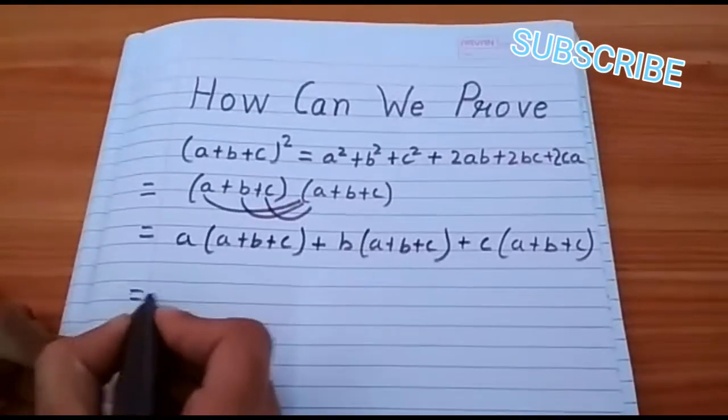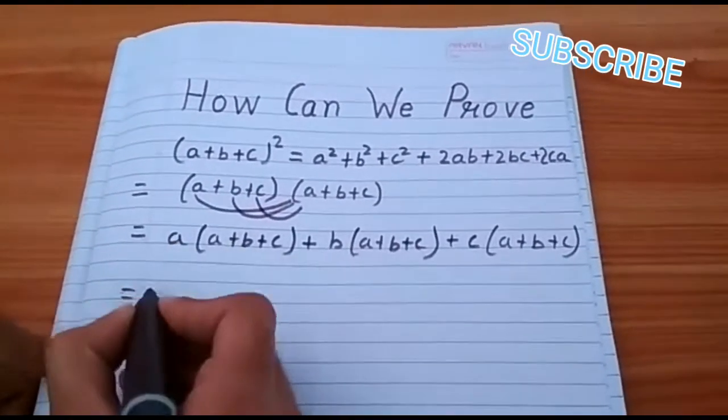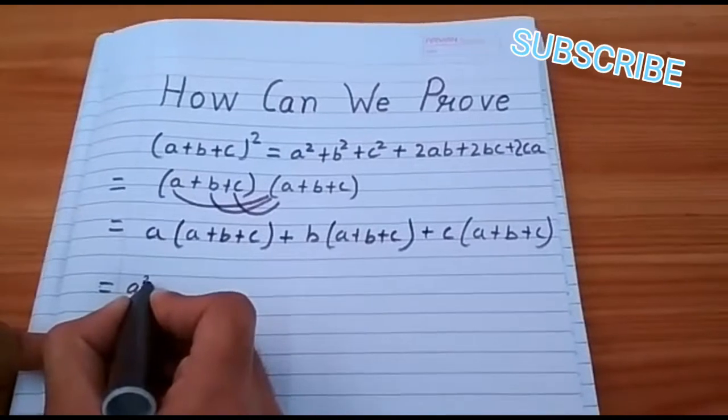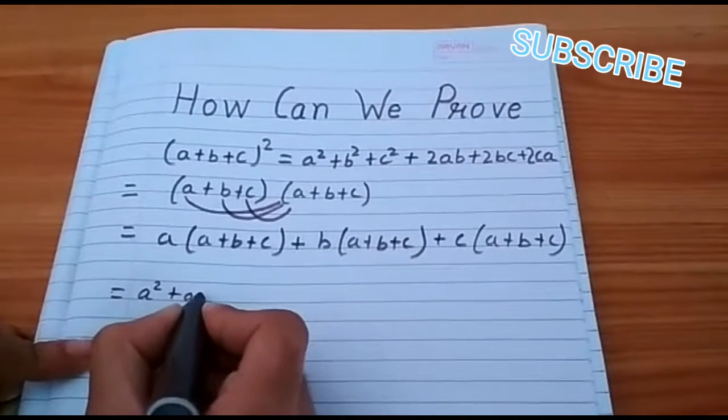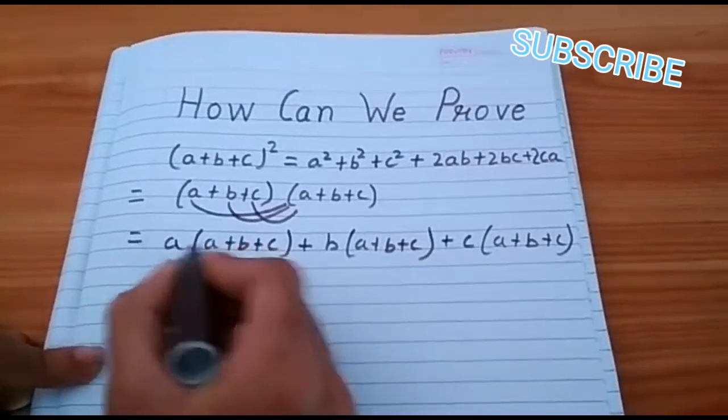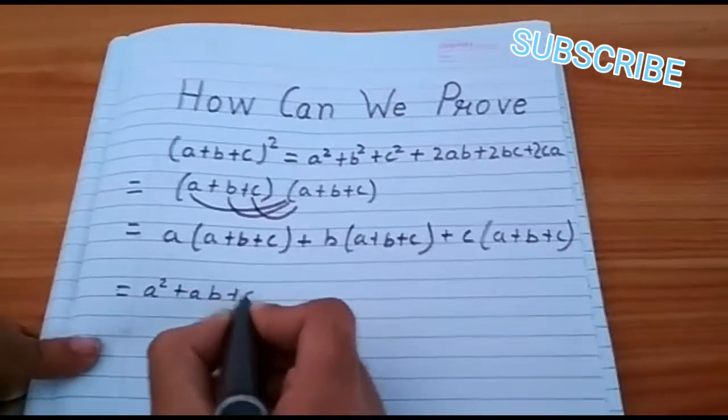Now, here equals to a into a equal to a². A into b equal to ab. A into c is equal to ac.